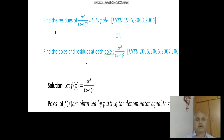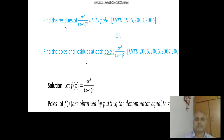Find the residue of Z e^Z divided by (Z minus 1) cubed at its pole. Let f of Z equal Z e^Z divided by (Z minus 1) whole cube.